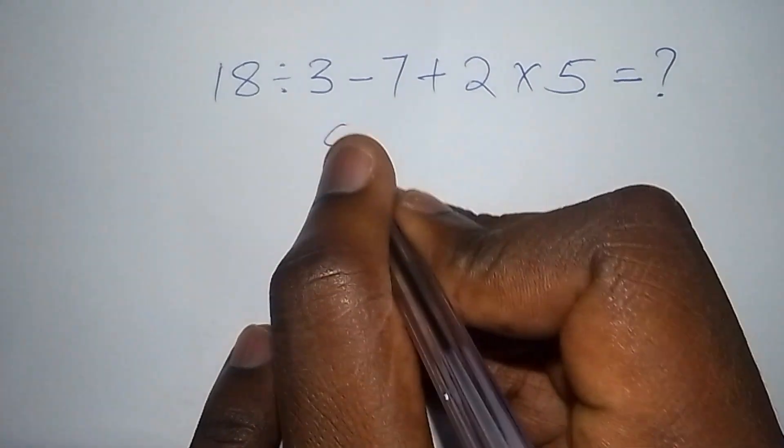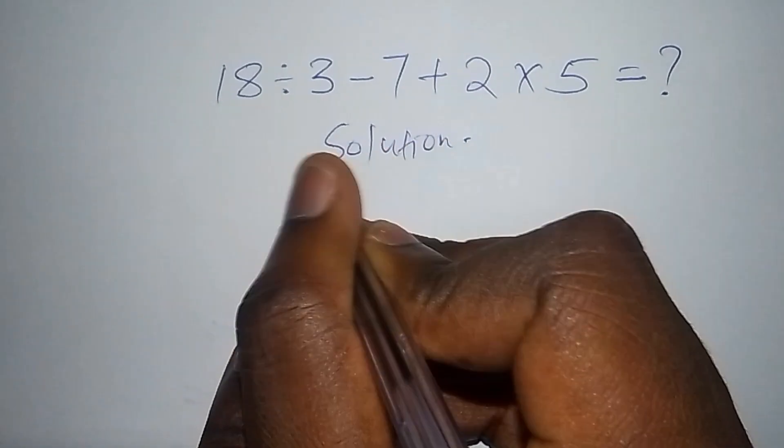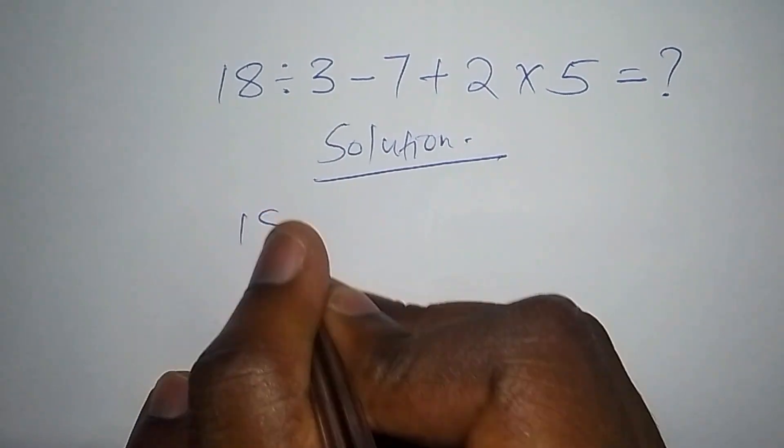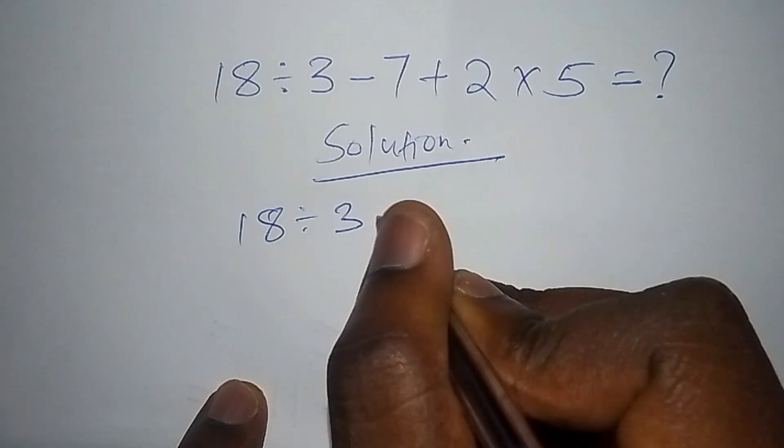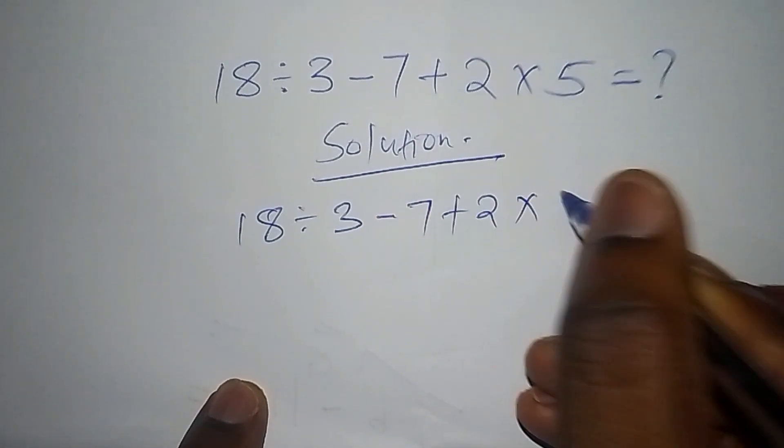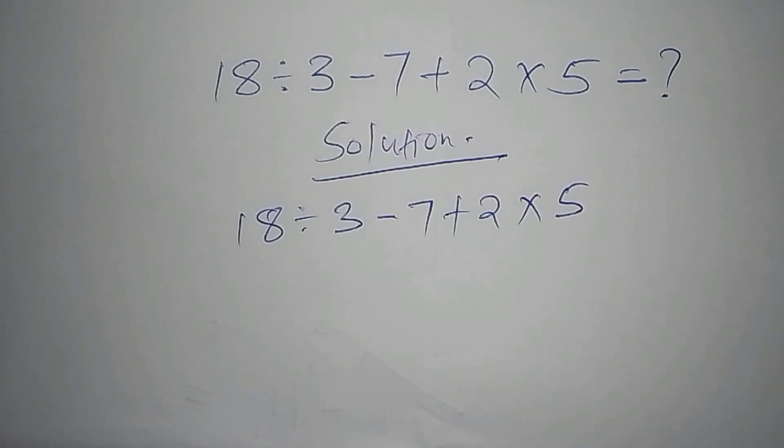So let's introduce the solution to this problem now. Under the solution we have the problem, that is 18 divided by 3 minus 7 plus 2 multiply by 5. So before I work out this problem, let's introduce what is called BODMAS.